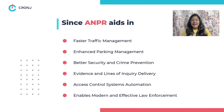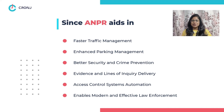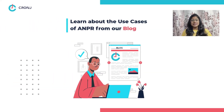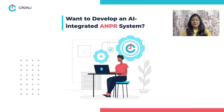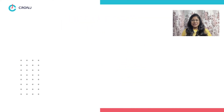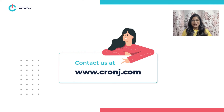Benefit 3: better security and crime prevention. Benefit 4: evidence and lines of inquiry delivery. Benefit 5: access control system automation. Benefit 6: enables modern and effective law enforcement. Learn more about where ANPR shows its best functionality from our blog — the link is in the description box below. And if you want to develop an AI-integrated ANPR system of your own, contact us right away to get an estimate for your project. That was all for this video, guys — see you in the next one!